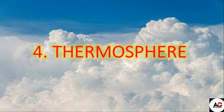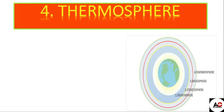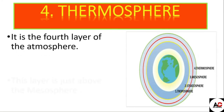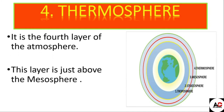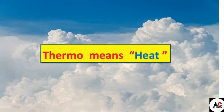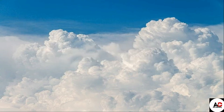The thermosphere is the fourth and last layer of the atmosphere. The first layer is the troposphere, then the stratosphere, then the mesosphere, and the last — the fourth one — is the thermosphere. 'Thermo' or 'therm' means heat, because this layer is the hottest layer and it is closest to the sun. That is why its name is thermosphere.